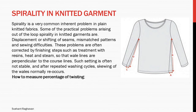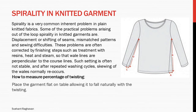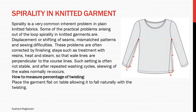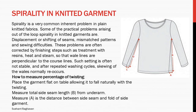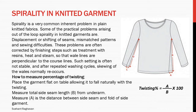To measure the percentage of twisting: place the garment flat on a table allowing it to fall naturally with the twisting. Measure total side seam length B from underarm. Measure A as the distance between the side seam and fold of the side garment. Twisting percentage equals A divided by B, multiplied by 100.